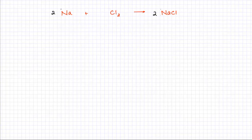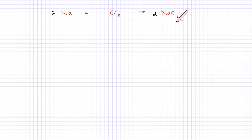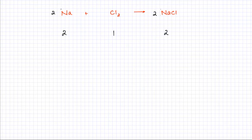I have written this balanced chemical equation where a sodium atom is reacting with a Cl₂ molecule and it's producing a compound NaCl. I've balanced that chemical equation: 2 sodium atoms react with 1 molecule of Cl₂ and it's producing 2 formula units of NaCl. If you look at the ratio in which they are reacting, 2 sodium atoms react with 1 molecule of Cl₂ and they produce 2 formula units of NaCl.